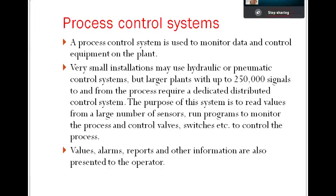In a distributed control system, your task is divided among multiple controllers. The purpose of this system is to read values from a large number of sensors, monitor the process, and control valves, switches, and other things. Based on the controller logic you provide, it makes final regulation decisions, and your final control elements carry out that regulation as ordered by the process control system.